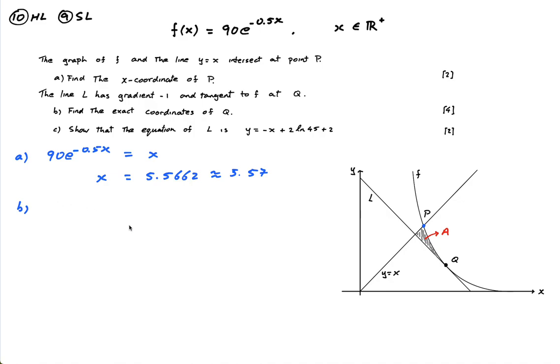Part B. The line L has gradient negative 1. So this is this line here, negative 1. And tangent to f at Q. So this is the tangent to the curve. So it gives you the gradient. The gradient is negative 1 and it says it's a tangent here at Q.